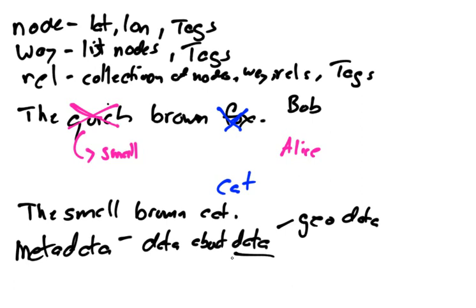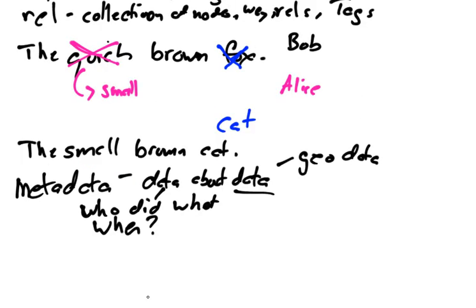And in this case, the core data, the real thing that we care about, is this geographic data. So it's our geo data. But we need to track other things. So we need to track who made what, who did what, when they did it, and what's the current version. And, of course, our question of why. I think we'll have to dig into why in a later video, though. So let's just focus on these things of who did what and when.